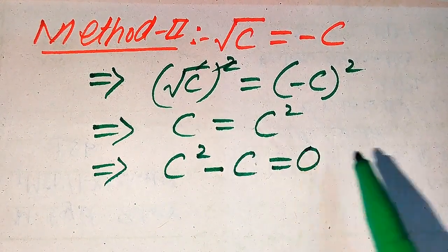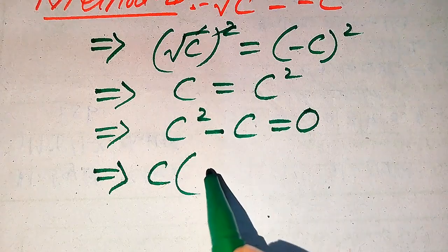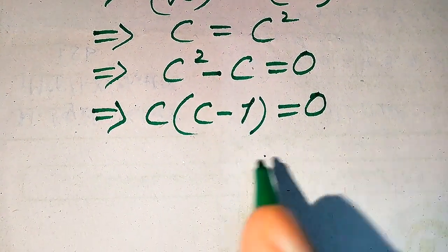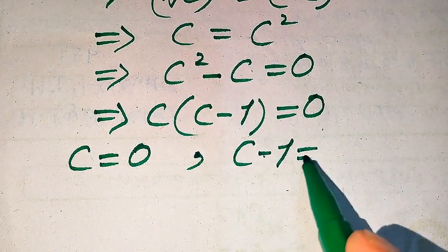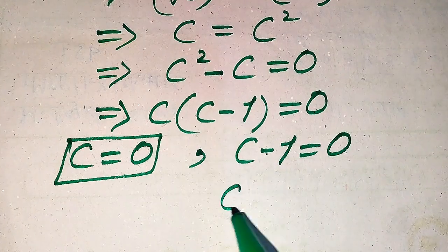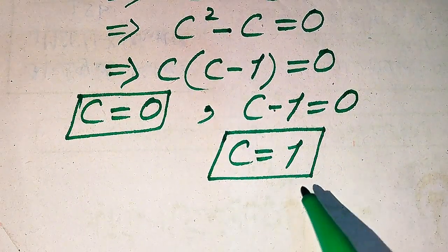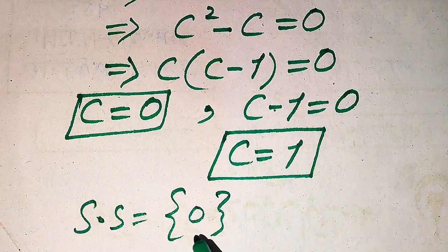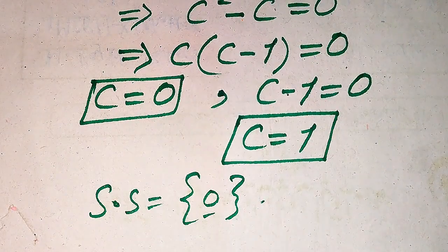Both terms involve C, so we take C as common factor: C times (C minus 1) equals 0. This gives two cases: C equals 0, and C minus 1 equals 0, so C equals 1. We again get the same two roots. The solution set is only {0}, since C equals 0 is the solution and C equals 1 is the extraneous root, as verified in the first method. This is the final answer.